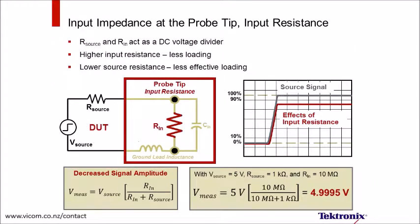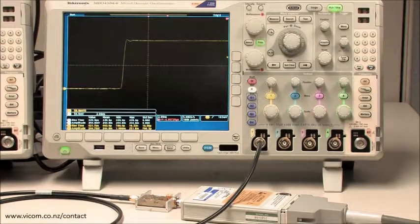Let's first discuss the input resistance specification. Depending on the source resistance, the probe and scope input resistance will reduce the amplitude of the signal under test. For most applications, the input resistance of a probe is less likely to cause significant probe loading, since most 10x passive probes that ship with an oscilloscope have 10 megaohm input resistance. Using the example equation, you can see how the probe's large 10 megaohm input resistance will have little impact on the measured signal.